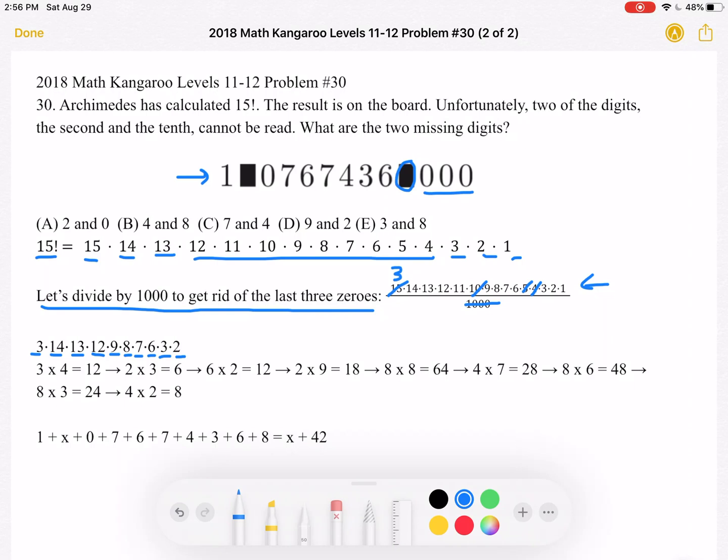Now we can see what the last digit of this is going to be because we only need to pay attention to the last digit, right? Because we are looking for the last digit of the number that we have found. We just divided by 1000 so we got rid of these three zeros. So again, we're trying to find that last digit.